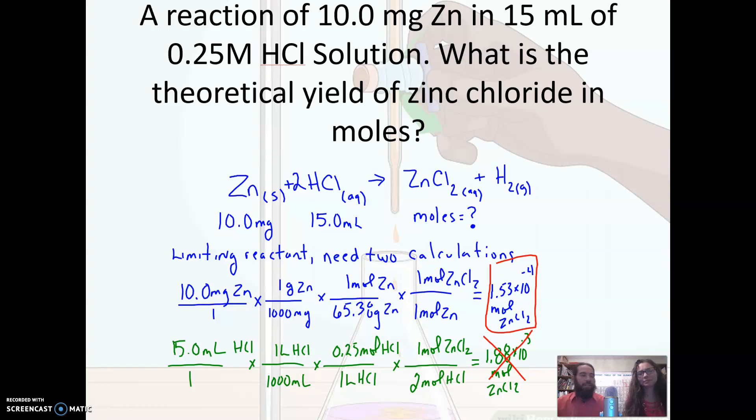We've got our information down there. Notice we've got two things that are not factors. That's another tip that maybe this is a theoretical yield problem. So starting with the zinc in milligrams, we first convert to grams of zinc because our molar mass is in grams per mole. We got that from the periodic table, the 65.38. That's the molar mass of zinc.